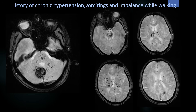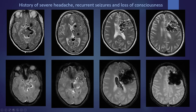A case of chronic hypertension with vomiting and imbalance shows a bleed in the right cerebellum with multiple punctate microbleeds in the brain stem, cerebellum, capsulonglionic region, and a few lobar bleeds. Another case of severe headache, recurrent seizures, and loss of consciousness shows multiple abnormal leash of blood vessels and serpiginous flow voids in the left frontal lobe, with a large feeding artery from the left MCA — consistent with AVM with bleed, lobar bleed, and intraventricular hemorrhage.